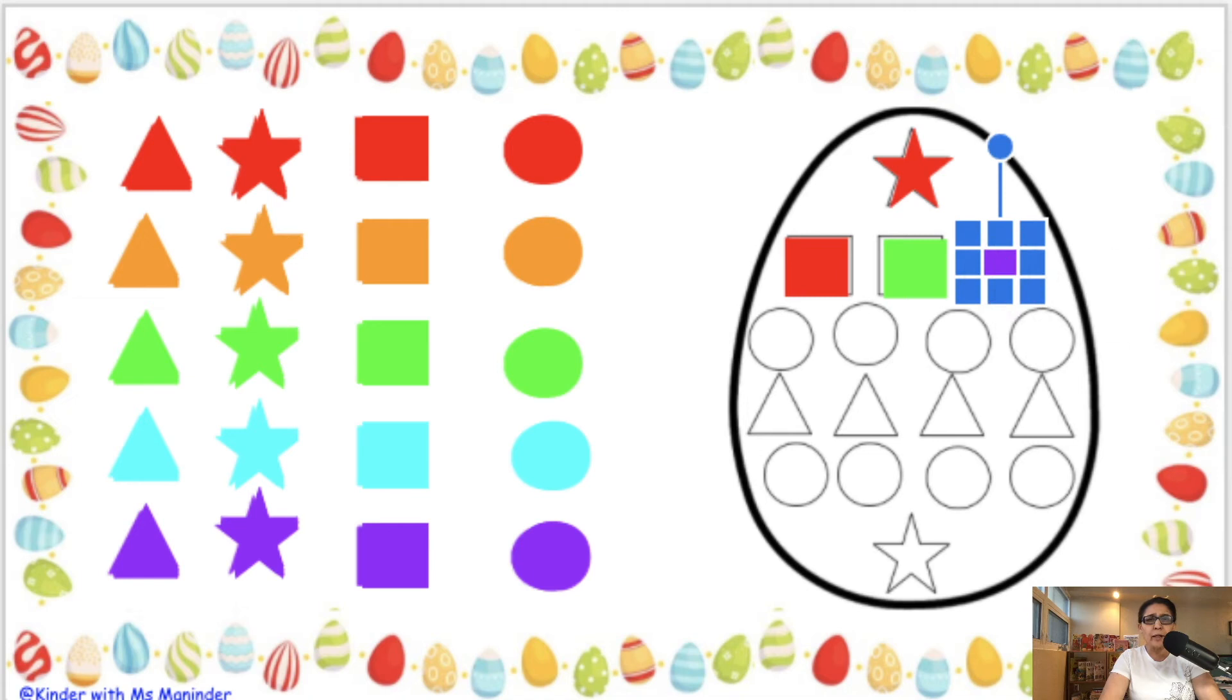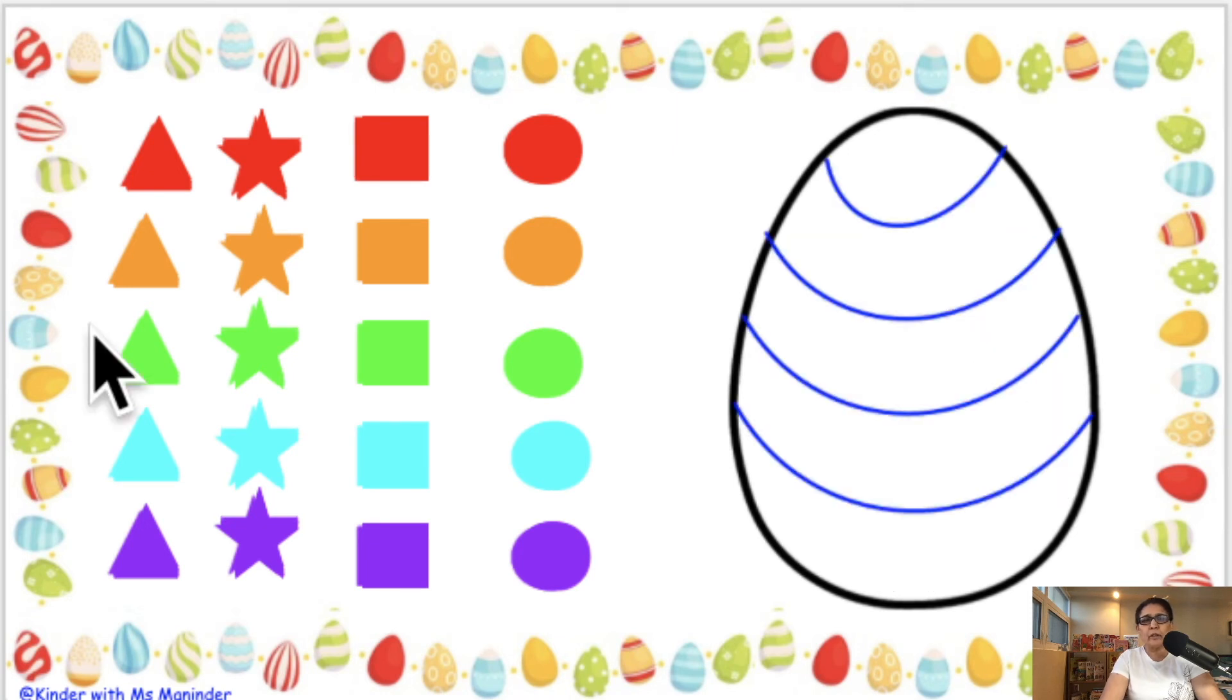I'm just sharing a little idea. In this way, you're going to arrange the shapes onto the egg. And then the next one is here.